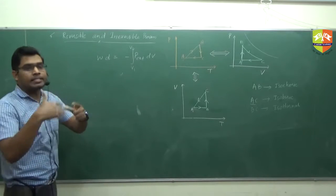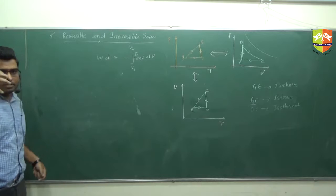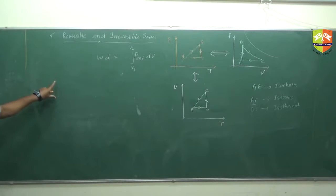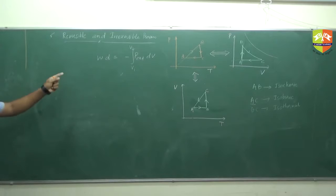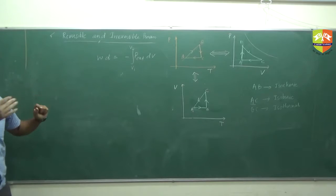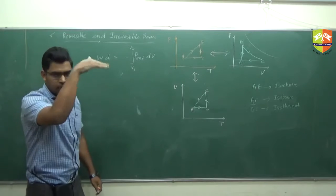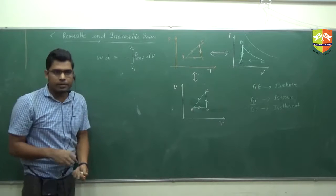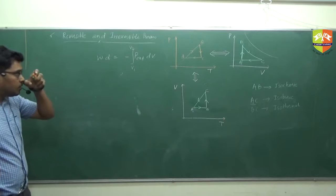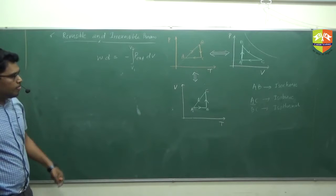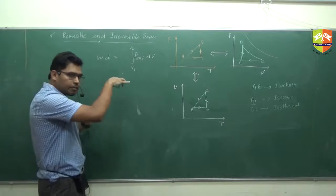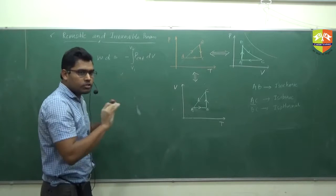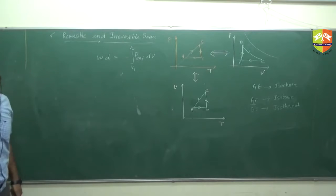In chemistry we consider the work done by the system. That is the reason for the sign difference — in chemistry we consider the pressure of the gas, while in physics we consider the external pressure, because we are focusing on the system.